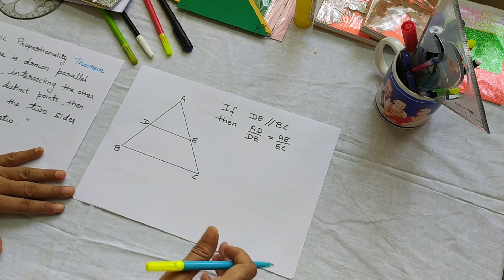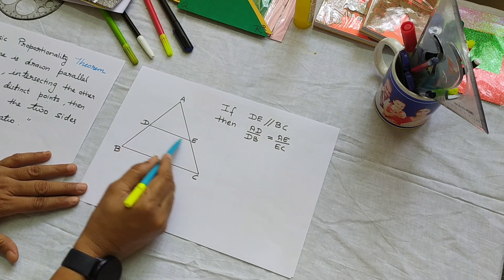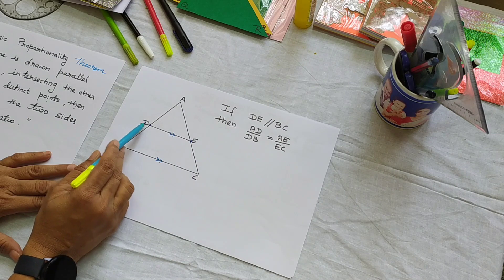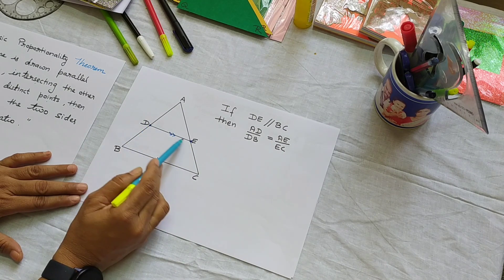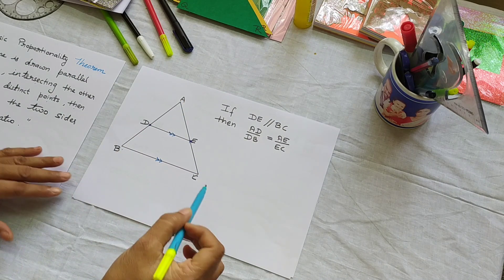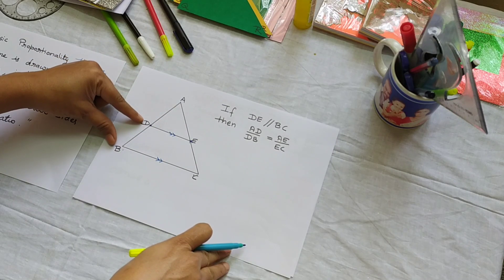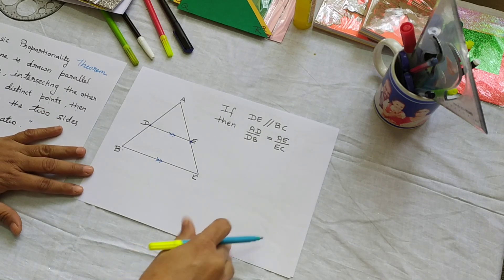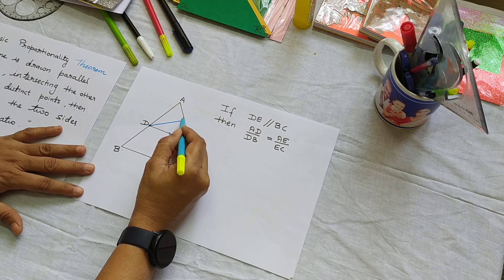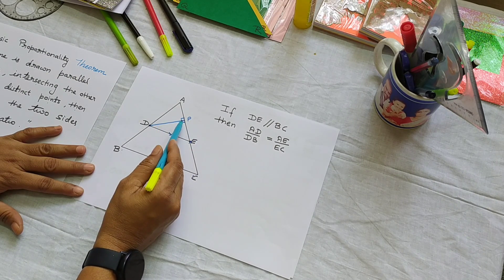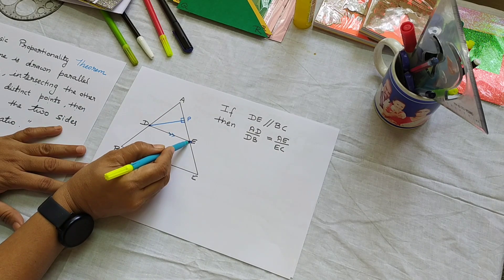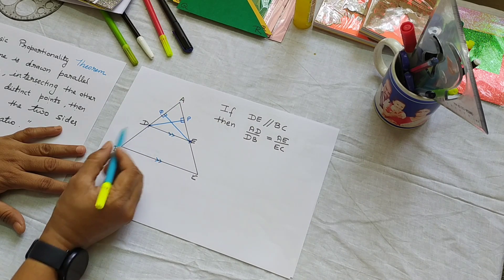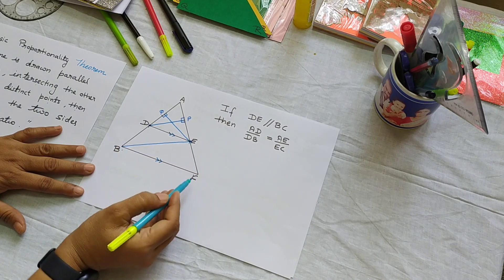The basic proportionality theorem holds for triangles. In a triangle, if there is a line drawn parallel to one side intersecting the other two sides in distinct points, say D and E, then the line DE divides AB and AC in the same ratio — that is, AD by DB is equal to AE by EC. For proving this we have to do some construction: from point D we drop a perpendicular DP such that DP is perpendicular to AE, and from E we drop a perpendicular EQ such that EQ is perpendicular to AD. Also we join BE and CD.